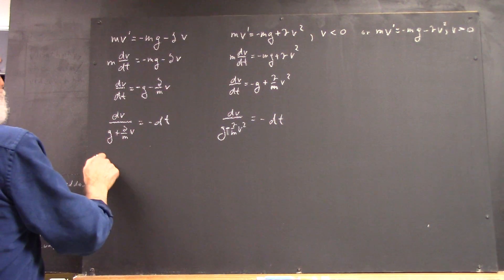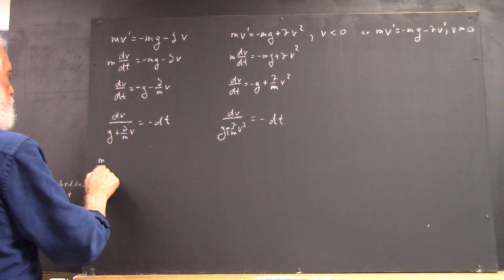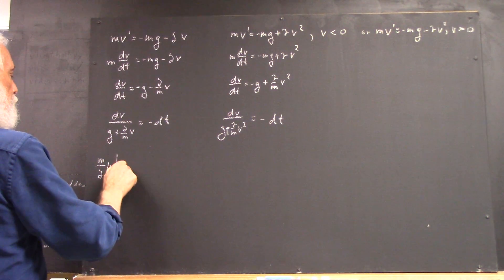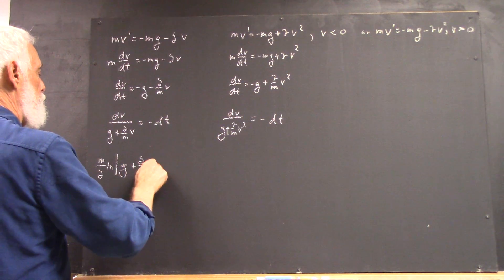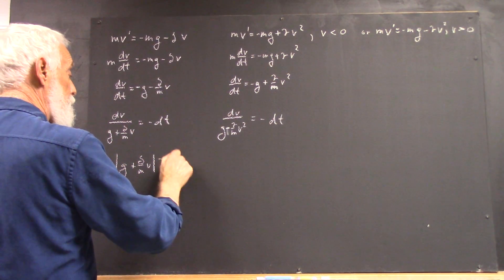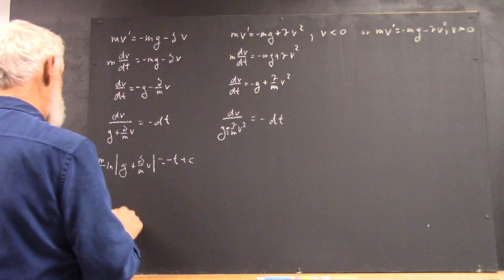So you're going to end up with an M over delta, natural log of absolute value of G plus delta over M, V, equals negative T plus a constant.